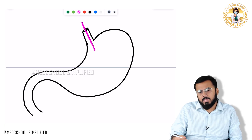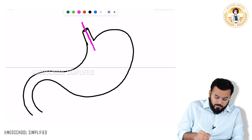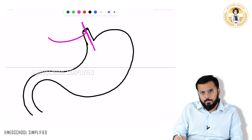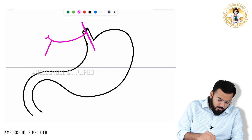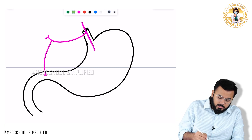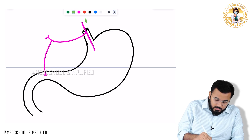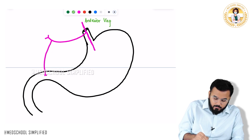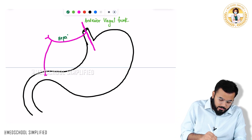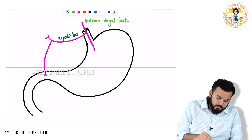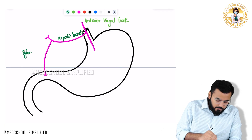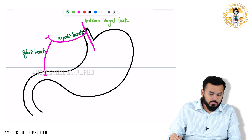The anterior vagal trunk gives three branches. The first branch is called the hepatic branch. From this hepatic branch, another branch supplies the pyloric part of the stomach — that branch is called the pyloric branch.